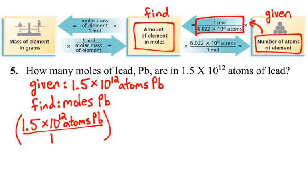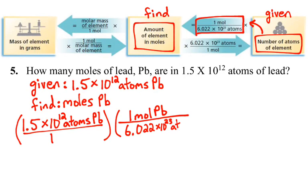Remember, 1 mole is equal to Avogadro's number of particles — whatever it is that we are looking at. In the case of elements, when we're talking about moles of elements, we're talking about numbers of atoms. Avogadro's number is 6.022 times 10 to the 23rd atoms. Multiplying by 1 mole over Avogadro's number allows us to cancel out our atoms of lead and results in moles of lead — using Avogadro's number as a conversion factor to get us the desired units.